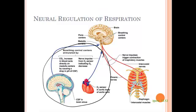Next we'll talk about non-neural factors that affect the breathing rate. There is an oxygen sensor found in the aortic body of the aortic arch — this is where blood is leaving the heart. If there's a low oxygen content in the blood, this center triggers the brain to increase the rate of breathing. So oxygen is important in controlling the rate of breathing that we have.